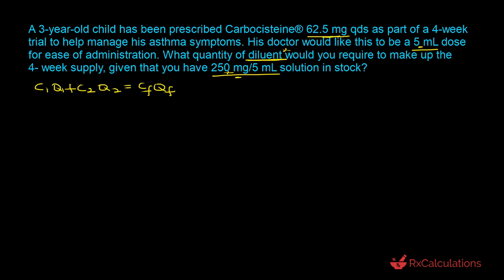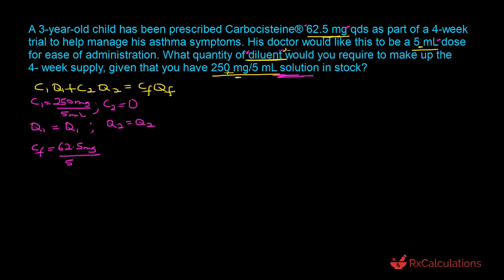Let's assign the components. We'll call the carbocysteine stock solution component one and the diluent component two. The concentration of the stock solution is 250 milligrams per 5 milliliters; its quantity Q1 is not given. The diluent has no carbocysteine, so C2 equals zero, and Q2 is also unknown. The concentration of the final product is 62.5 milligrams per 5 milliliters.